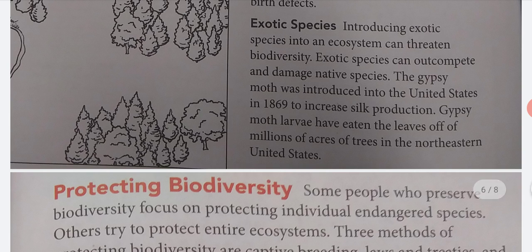Exotic Species. Introducing exotic species into an ecosystem can threaten biodiversity. Exotic species can out-compete and damage native species. The Gypsy Moth was introduced into the United States in 1869 to increase silk production. Gypsy Moth larvae have eaten the leaves off millions of acres of trees in the northeastern United States.